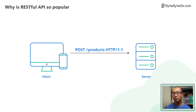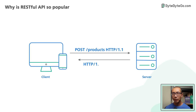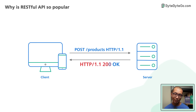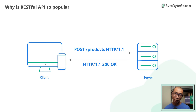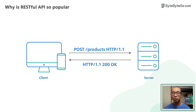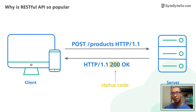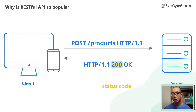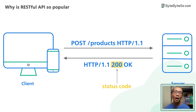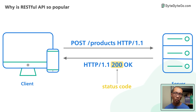The server receives the request, processes it, and formats a result into a response. The first line of the response contains the HTTP status code to tell the client what happened to the request.